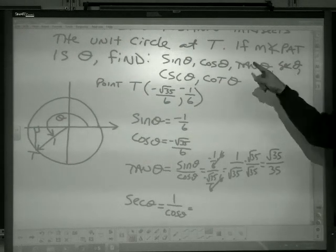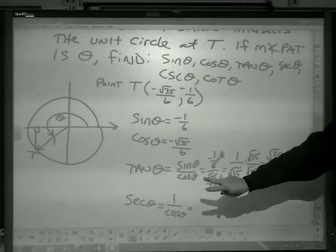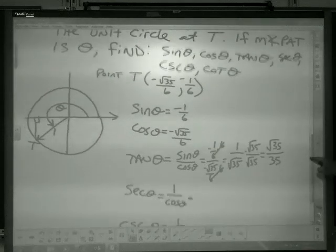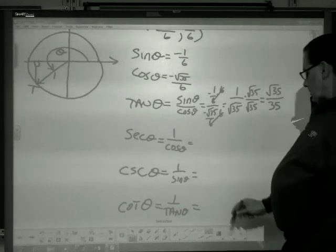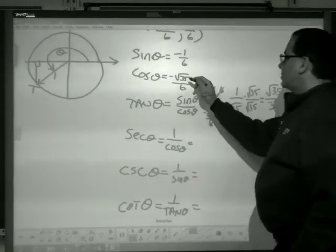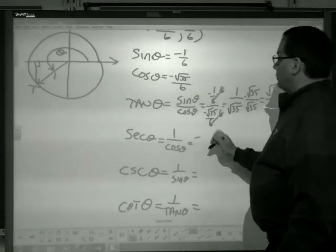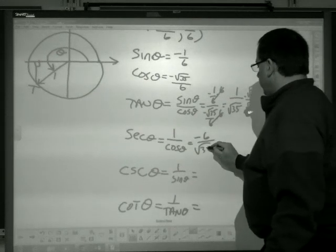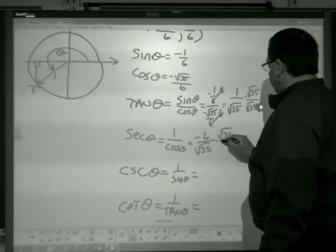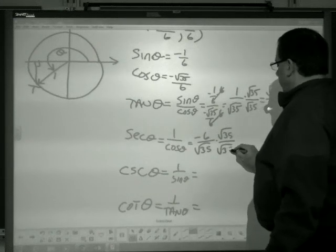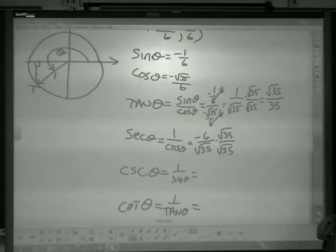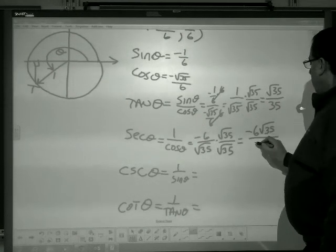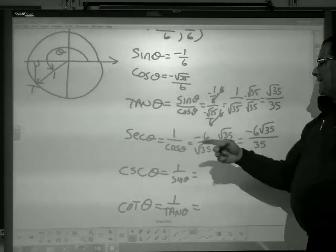So, secant now. What's the secant? Well, the secant is the flip of the cosine. So, if I take the cosine value and flip it, I have secant. So, the secant is 1 over the cosine. So, it is negative, because when I flip, the negative doesn't go away. 6 over the square root of 35. But, I don't like to leave that on the bottom. So, again, I'll rationalize that denominator. And, I get negative 6 square root of 35 over 35. So, that would be the secant.